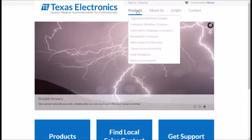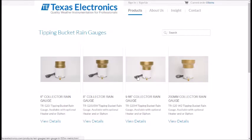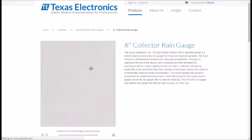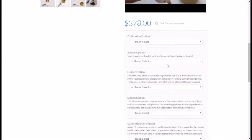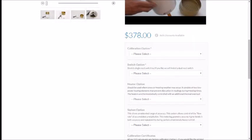To add the siphon option, just go to our website and go to the tipping bucket rain gauge. All of these have the option. Just scroll down on the right hand side, you will see the siphon option. Click it to add it and we will integrate it in the rain gauge. Thank you.